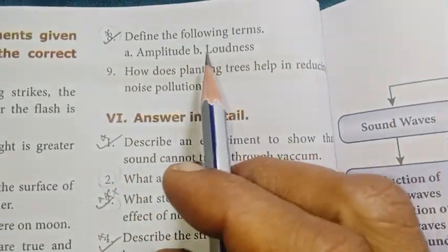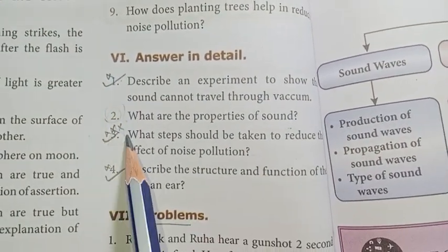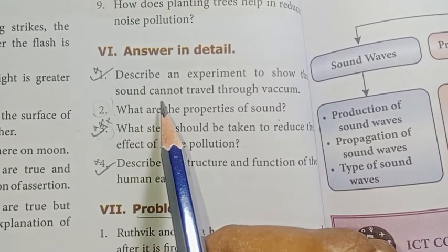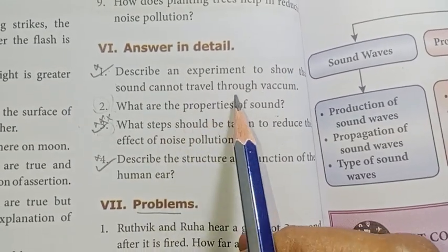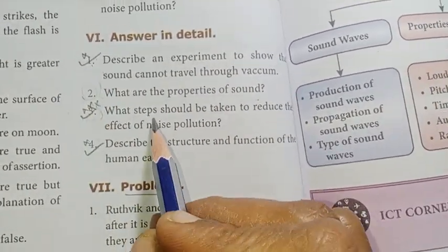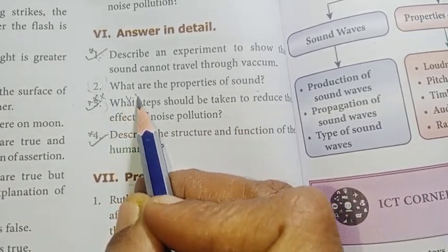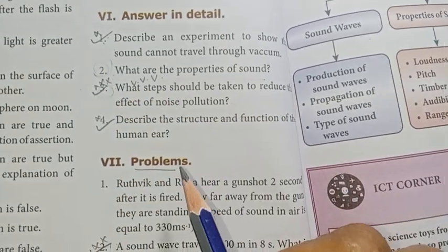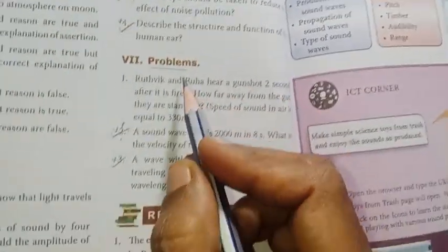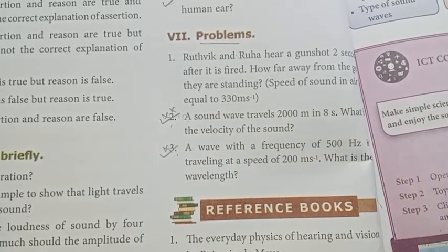Define the following terms: Amplitude and Loudness. First one, third one, fourth one — three important. First: experiment to show that sound cannot travel through vacuum — one district. What steps should be taken to reduce the effect of noise pollution? Very important detail — four districts. Structure and function of the human ear — two districts. Numerical problems: second and third, repeated. Very important.